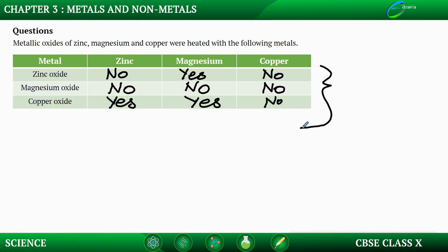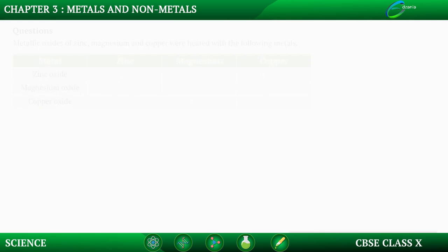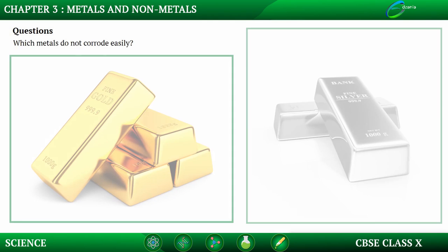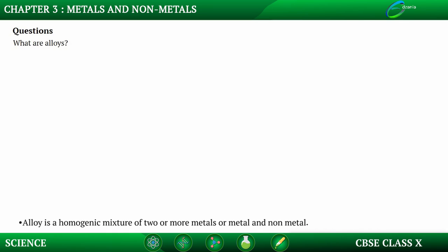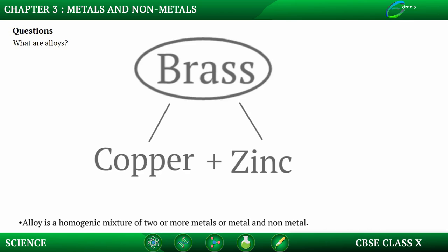All of these answers are based upon the reactivity series. Next question: which metals do not corrode easily? Metals that have low reactivity, like gold and silver, do not corrode easily. Next question: what are alloys? An alloy is a homogeneous mixture of two or more metals or a metal and a non-metal. For example, brass is an alloy of copper and zinc.